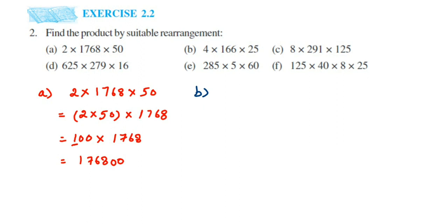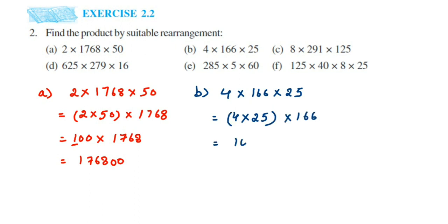In part (b) we have 4 × 166 × 25. Again, 4 × 25 = 100, so let's rearrange as (4 × 25) × 166 = 100 × 166. Since 166 × 1 = 166, and 100 has two zeros, we just place those two zeros at the end. The answer is 16,600.